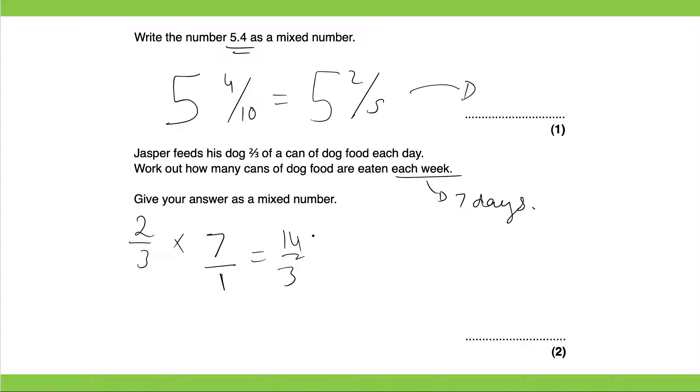And it says give your answer as a mixed number. This would become 4 and two thirds. That would be our final answer and is worth 2 marks.